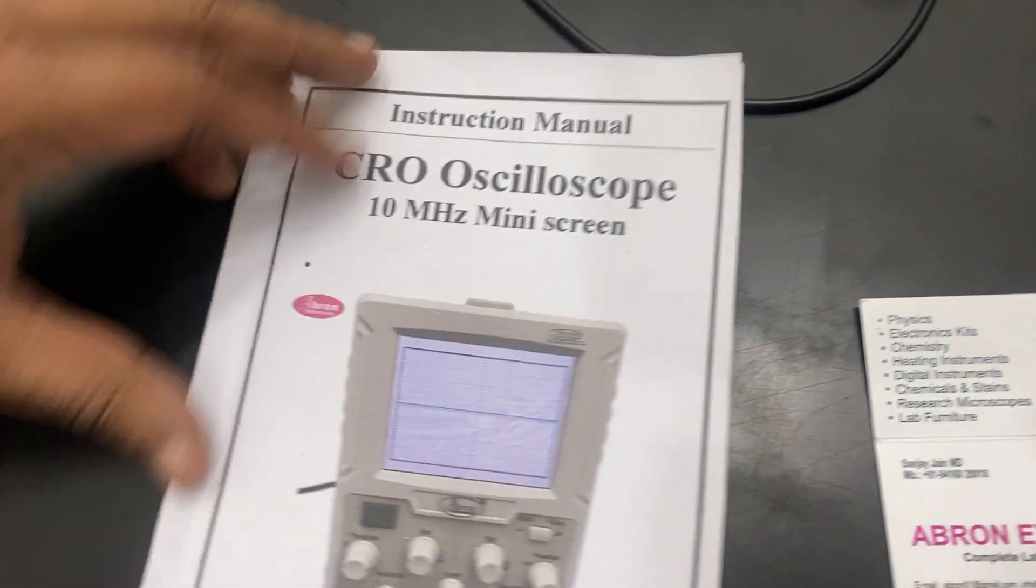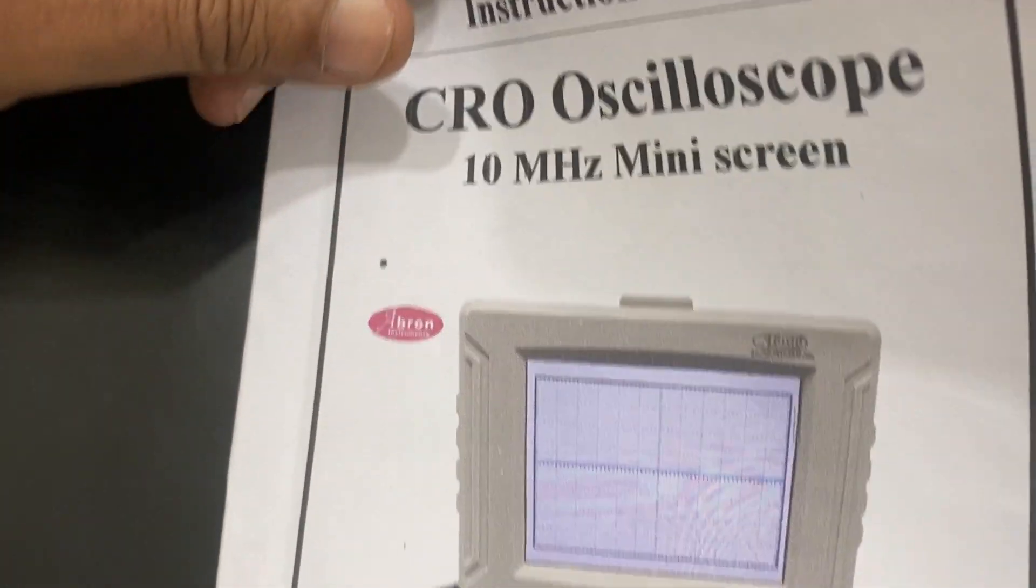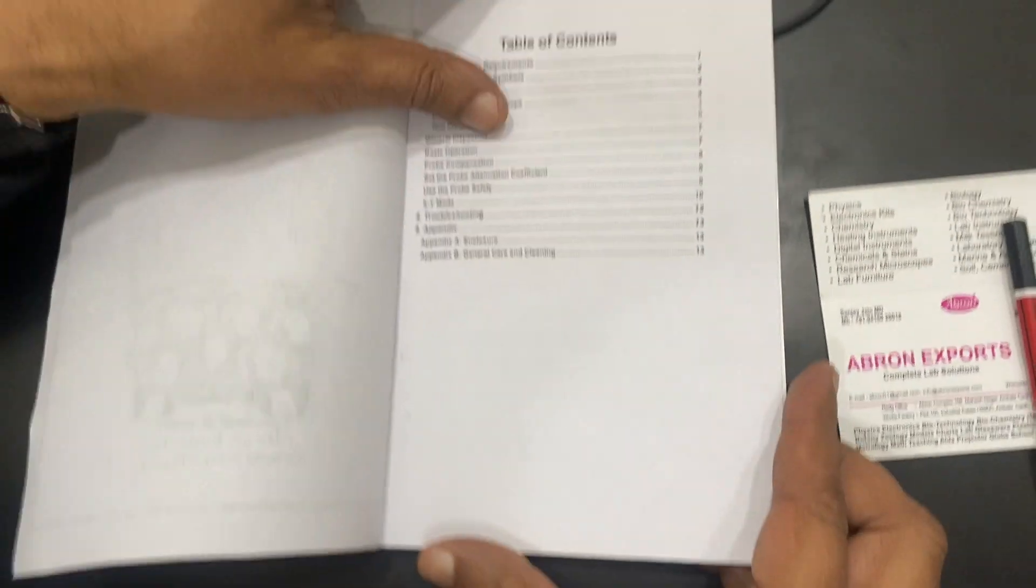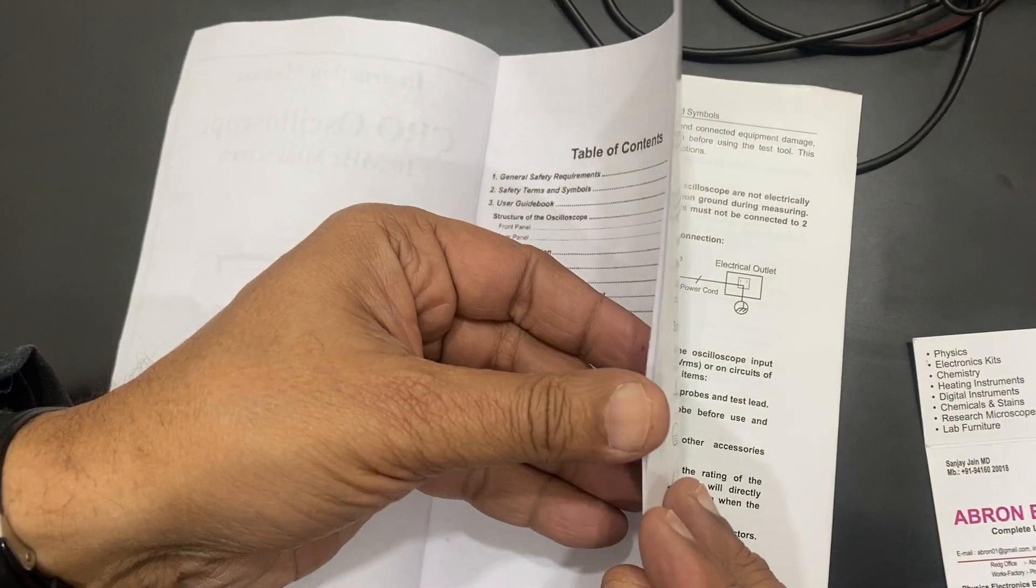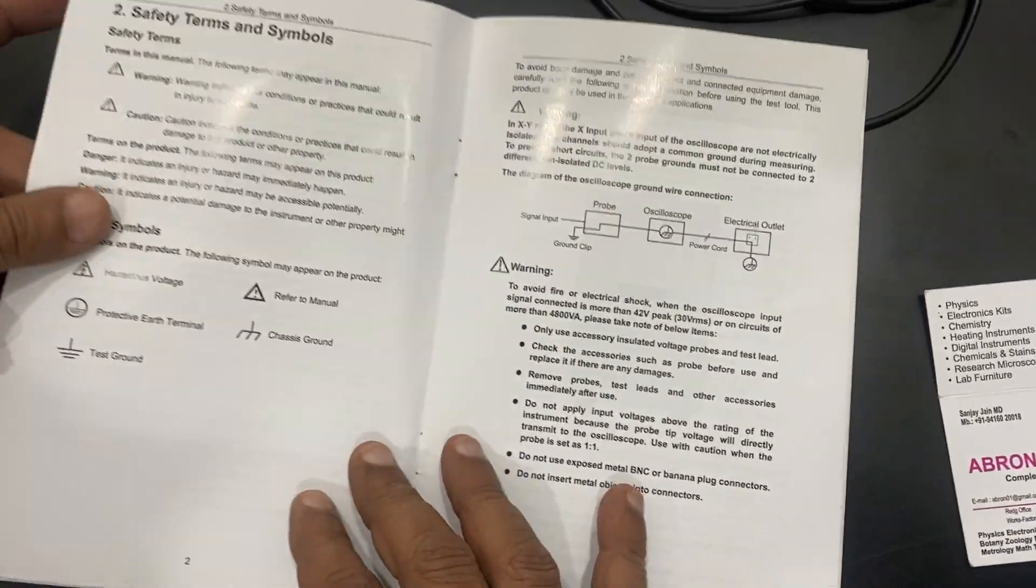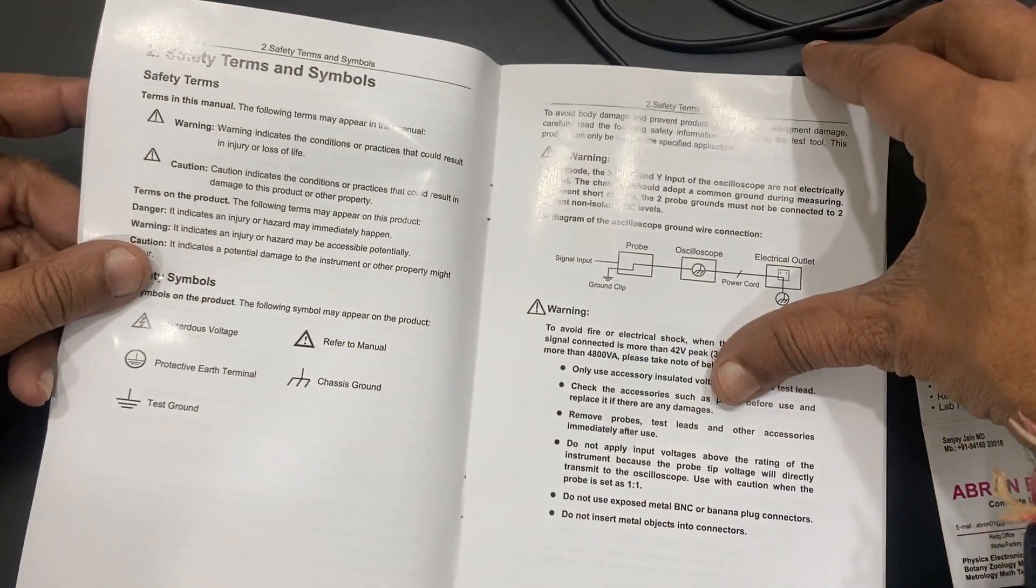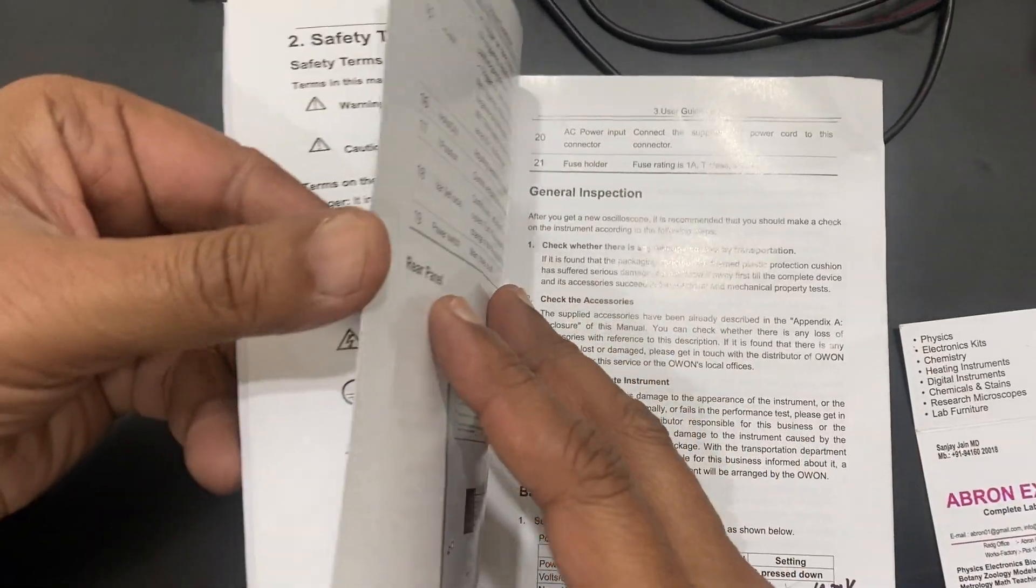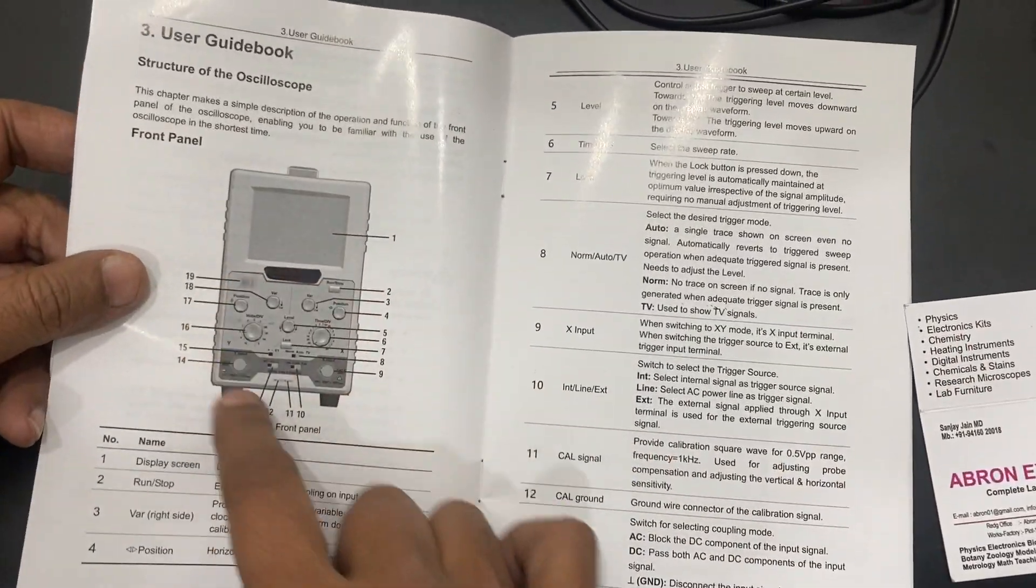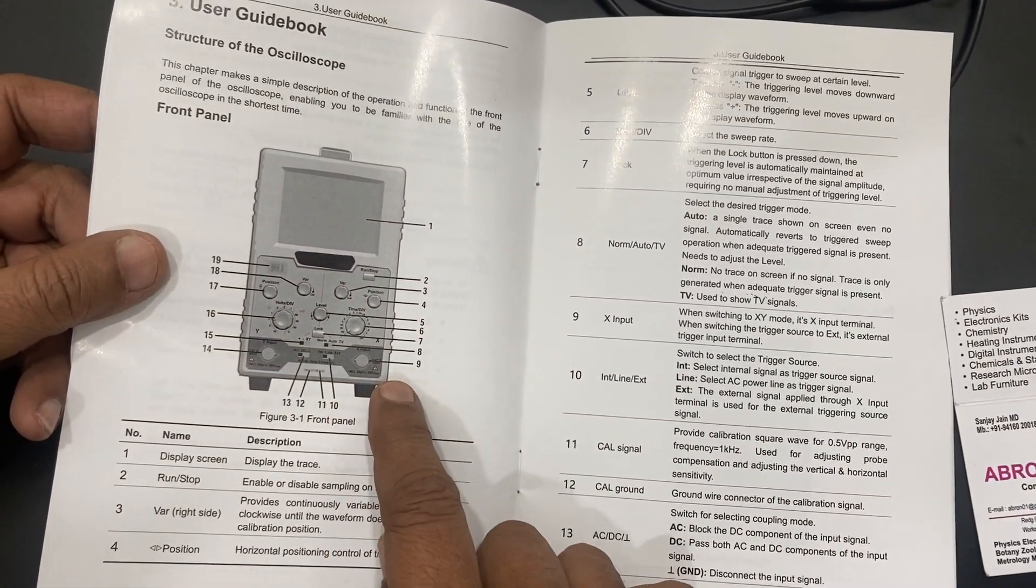It comes with the full manual. You can see the manual, turn my voice. All the parts are there, what are the safety features, what are the signals, symbols, and what are the different parts. I have already explained you all the parts.